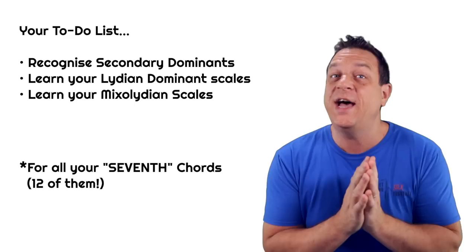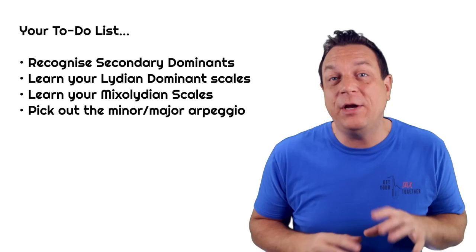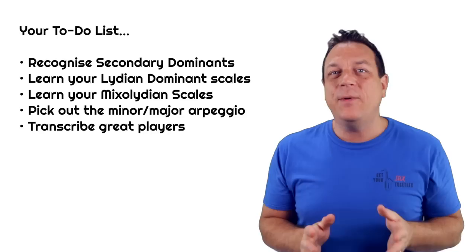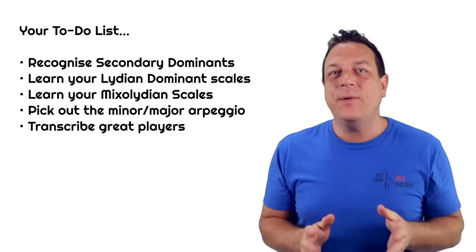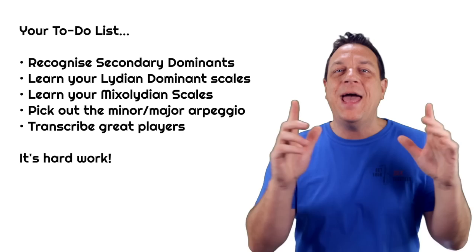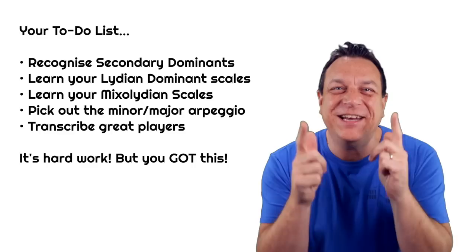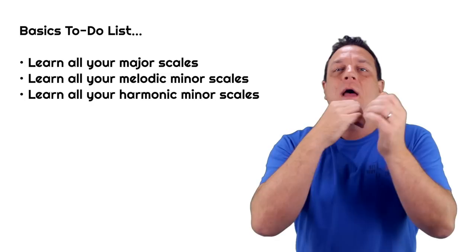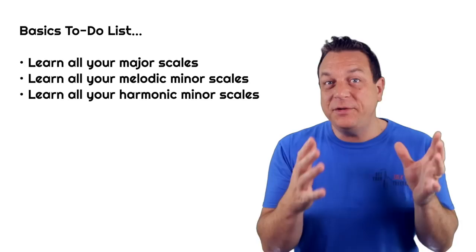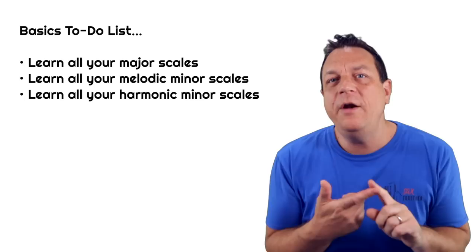After that, work on picking out that minor-major arpeggio and transcribing great players to look for ideas on how to use it. With enough work, you'll begin to be able to improvise over that secondary dominant chord. If you think this sounds like a lot of hard work — it is. That's why most people stick to one scale or pentatonic option. There's nothing wrong with that, but blowing over chord changes is much more difficult and takes a lot more work, knowledge, and experience. Learn all your major, melodic minor, and harmonic minor scales using the playlist linked above — it's a perfect tool.